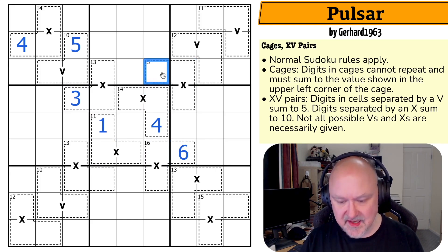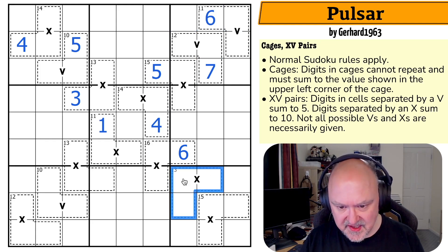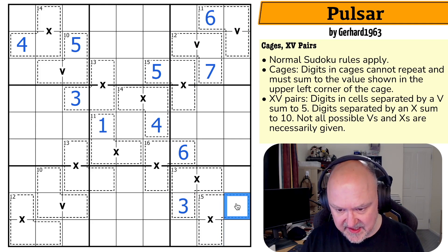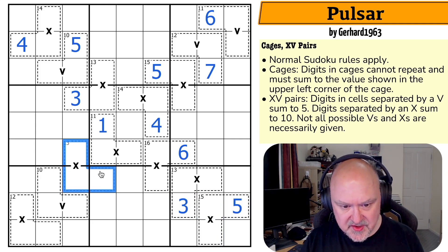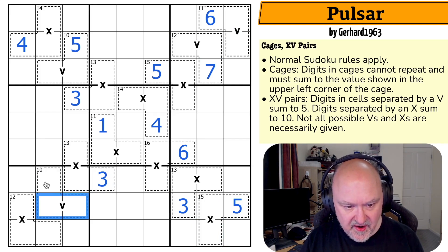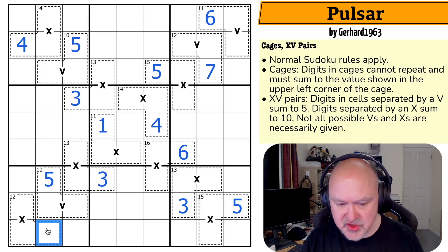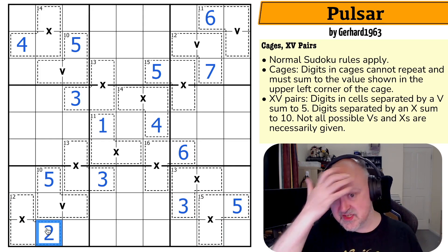11 minus five is six. 13 minus 10 is three. 15 minus 10 is five. 13 minus 10 is three. 10 minus five is five. And 12 minus 10 is two. And we get all of those digits to start with.